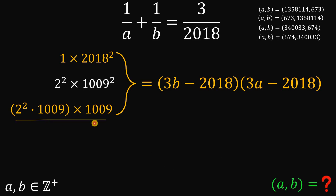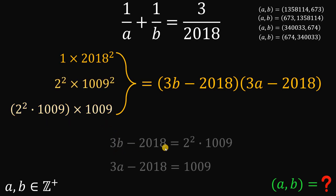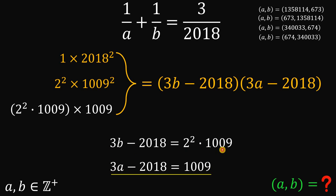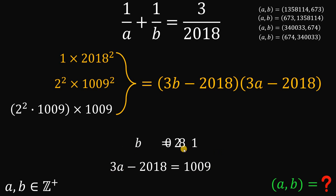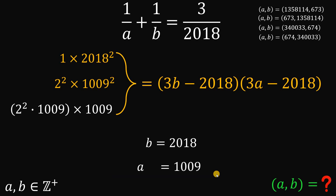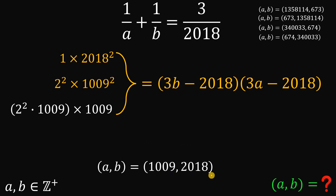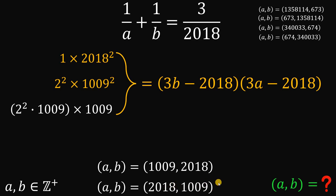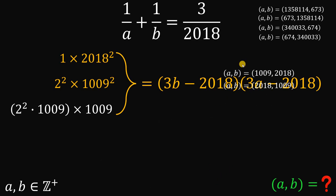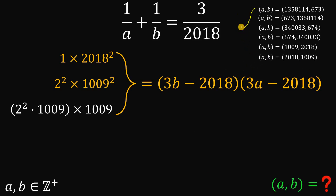For the last factor pair — 4·1009 times 1009 — we set 3B minus 2018 equals 4 times 1009 and 3A minus 2018 equals 1009. Solving for B gives B equals 2018, and solving for A gives A equals 1009. So the fifth pair is A comma B equals 1009 comma 2018, and switching positions gives 2018 comma 1009.